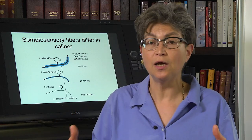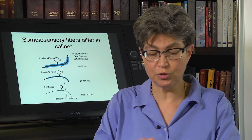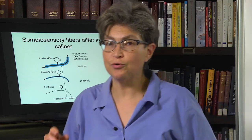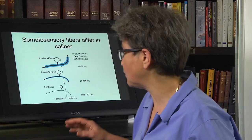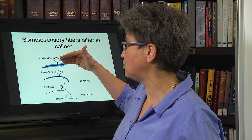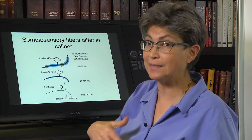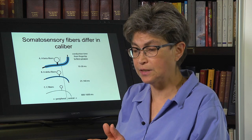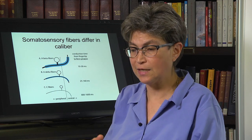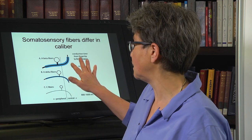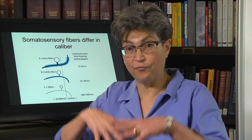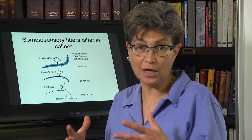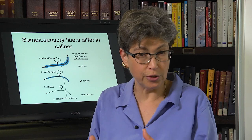Each of these subtypes has a particular percept it results in — a percept of vibration, a percept of light touch, or a percept of pressure. There is a rough alignment between a single fiber type and that feeling, but the alignment is not exact. Anything where you don't have the full complement of all the fibers involved will not feel natural — it'll feel off, it'll feel weird.